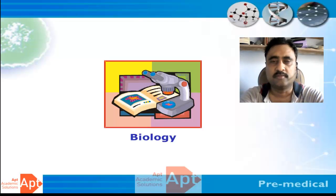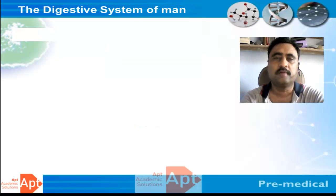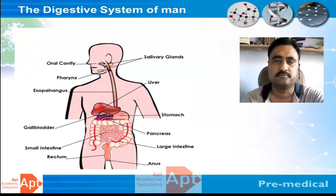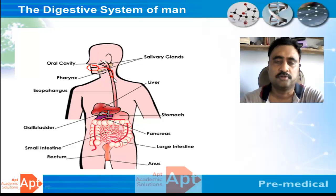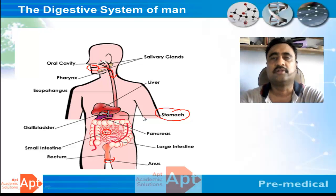Welcome to this session on animal physiology. Today we will be discussing digestion in the stomach. First, let's look at the human digestive system. The digestive system starts from the mouth, then food goes to the oesophagus, from the oesophagus it reaches the stomach, then to the small intestine, then to the large intestine, and finally to the anus. Today we will focus on how digestion occurs in the stomach.